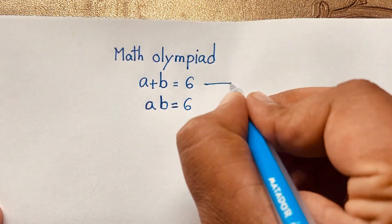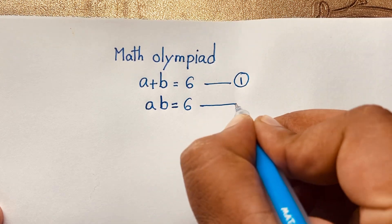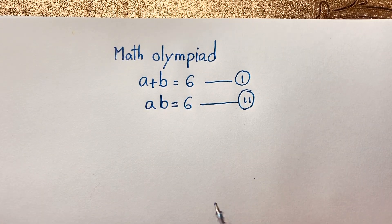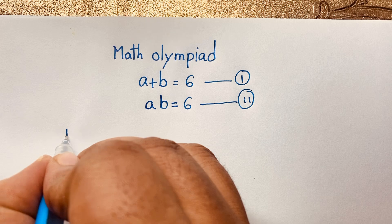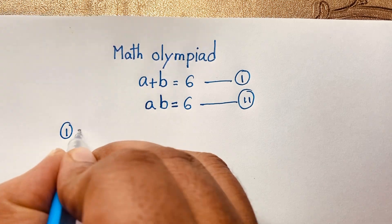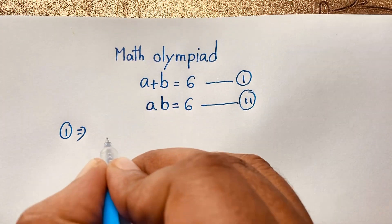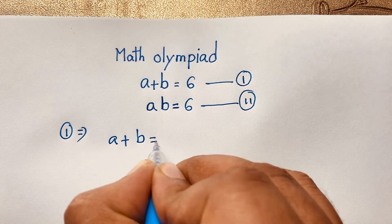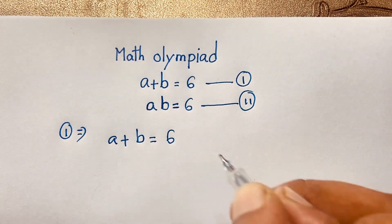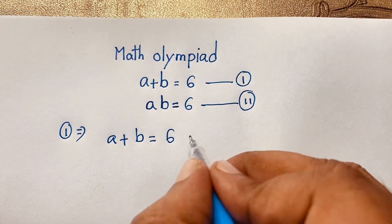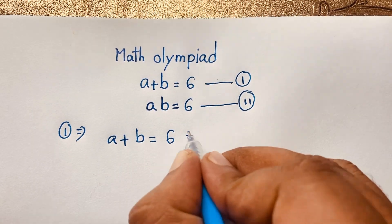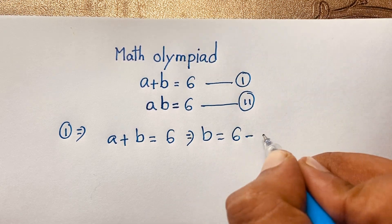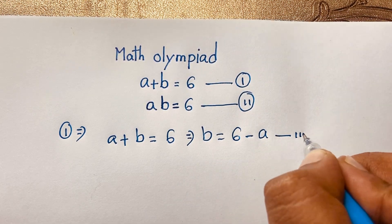So this is our first equation. We have called this the second equation. From the first equation, A plus B is equal to 6, you can see this expression: B is equal to 6 minus A. This is our third equation, moving A to this side makes it negative A.